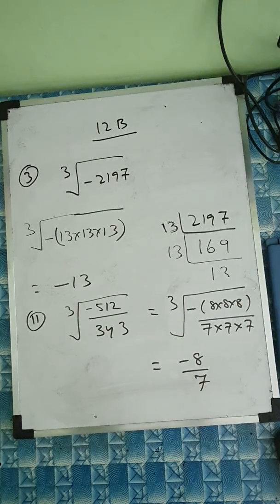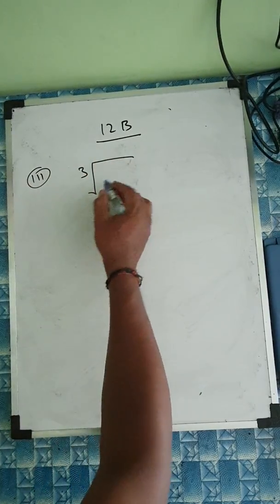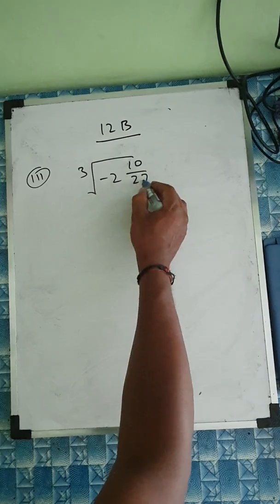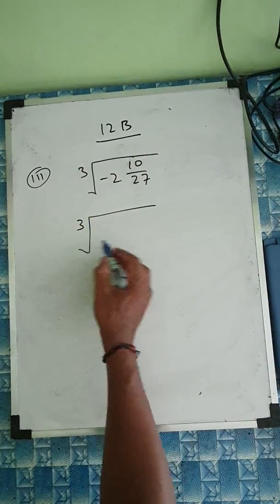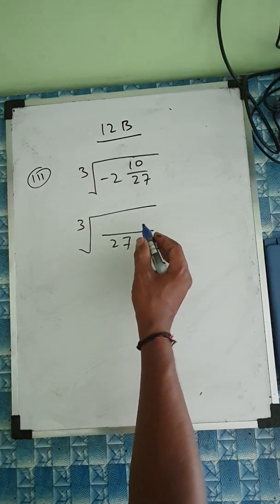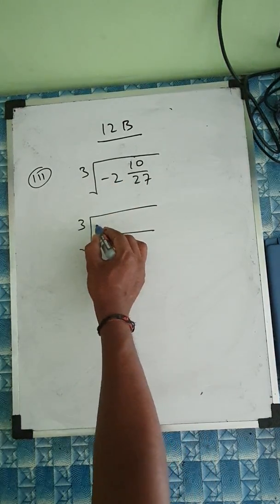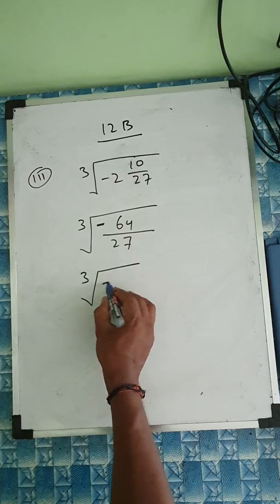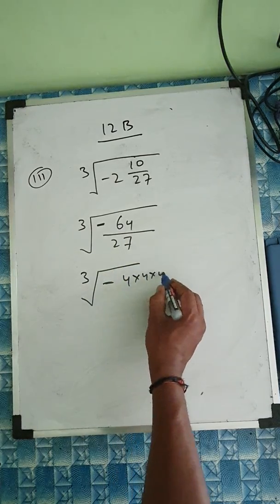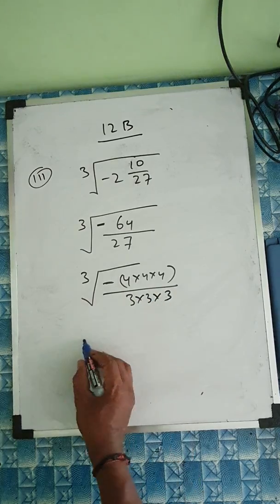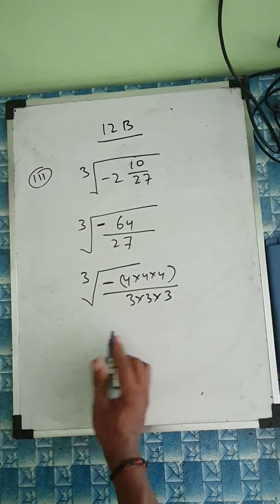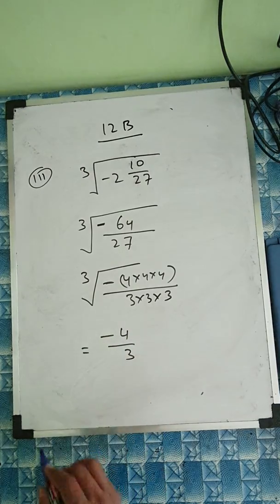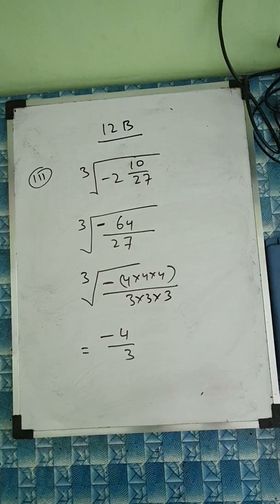Question number 3: cube root of minus 64 over 27. We know 64 = 4 × 4 × 4 and 27 = 3 × 3 × 3. So the cube root equals minus 4 over 3.